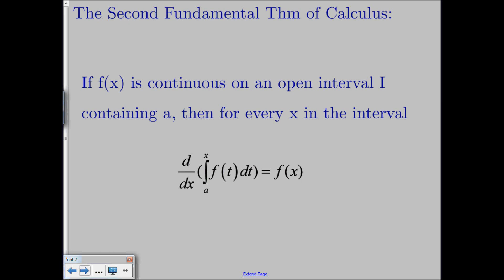So now what we're going to talk about, which is a little bit more important and probably the heftier part of the video, is the second fundamental theorem of calculus. What this theorem says is that if f of x is continuous on an open interval I, and a is somewhere in that interval, then for every x in the interval, the derivative of the definite integral from a to x of f of t dt is just equal to f of x. This t here is what we call a dummy variable — it's in place of what we normally say for x, so you don't want x to match up with the dummy variable since we're taking the derivative with respect to x.